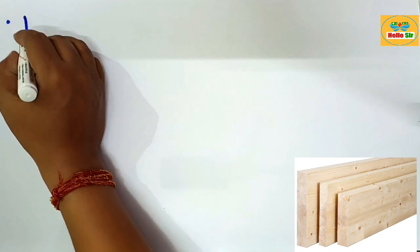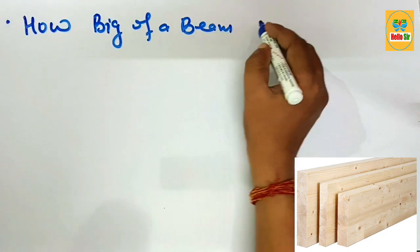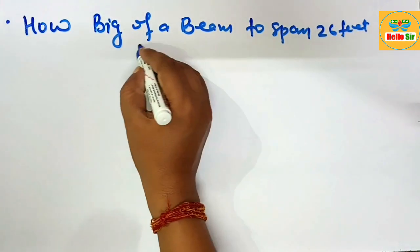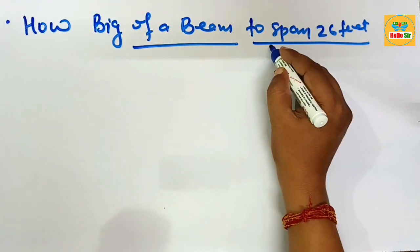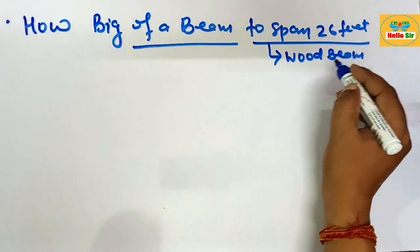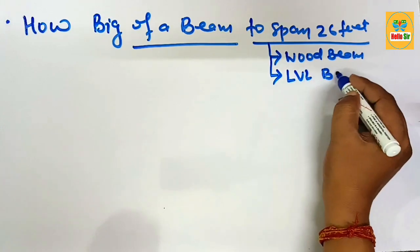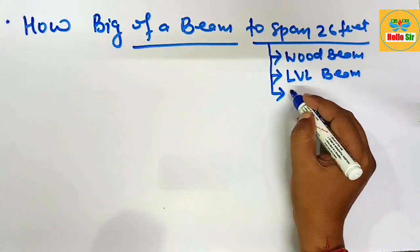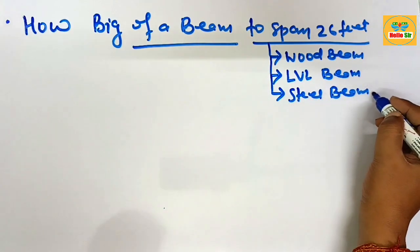Today we look at how big a beam you need to span a 26-foot distance. There are several types of materials used as beam structures: the wood beam — what size wood beam do you need to span 26 feet; the second is the LVL beam, laminated veneer lumber — what size LVL beam do you need to span 26 feet; and the third is the steel beam — what size steel beam do you need to span 26 feet.